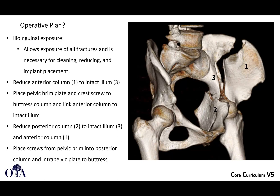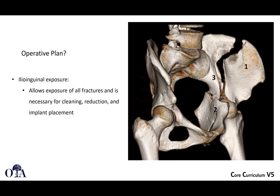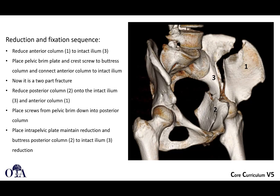You can then work on the posterior column — from the ilioinguinal approach you can get some exposure and get that reduced to the anterior column. You would then want to place screws from the pelvic brim down into the posterior column, and maybe an intrapelvic plate to buttress. Let's see how we might do that with the ilioinguinal approach.